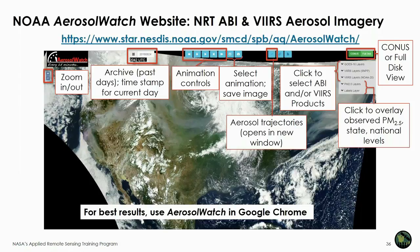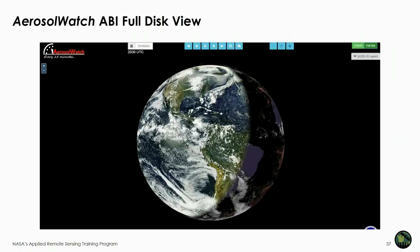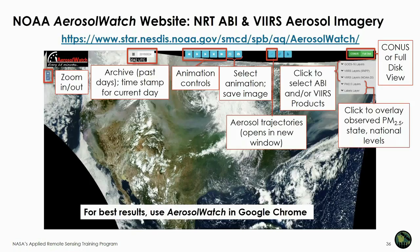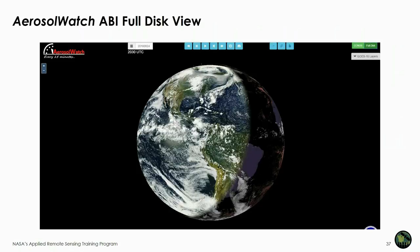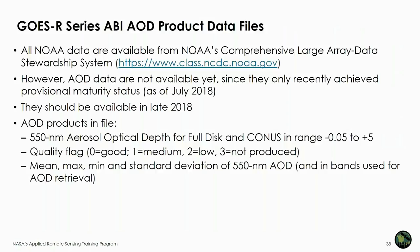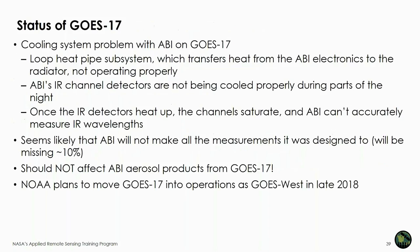Now a quick tutorial on the Aerosol Watch website — if you Google 'NOAA aerosol watch,' you'll find the website; best results with Google Chrome. It has CONUS views and you can look at different GOES-16 aerosol layers, overlay VIIRS from polar orbiting satellites, and access full disk views. The AOD data weren't quite available at the time of this presentation as they had just recently achieved provisional maturity on July 24th, but when available they can be downloaded from the CLAS website.